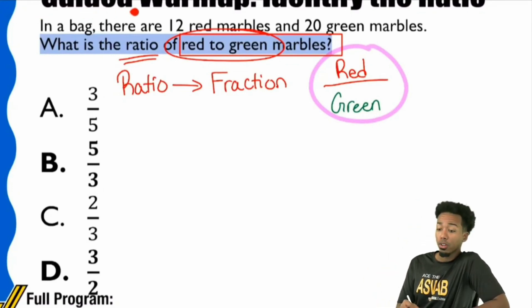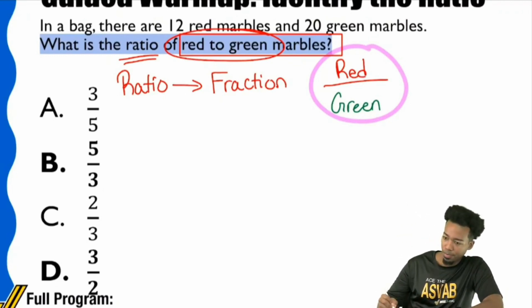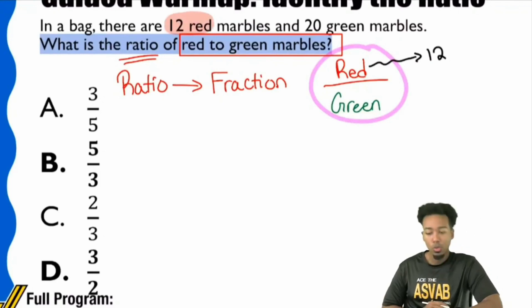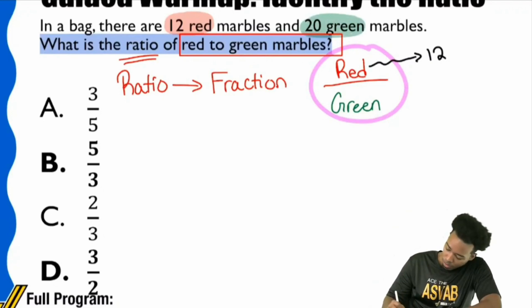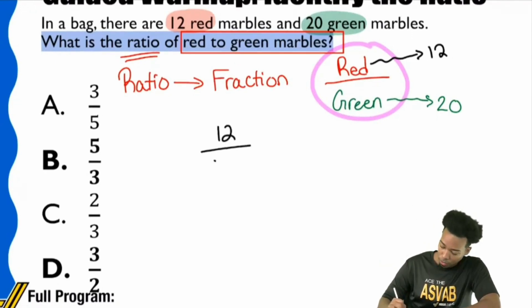In a bag, there are 12 red marbles and 20 green marbles. Let's go ahead and write a ratio of red to green. How many red marbles did they say there were? They say 12, right? 12 red marbles. And how many green marbles? 20 green. So we have 12 red over 20 green. That's it. We actually had all the information we needed, and so we have 12 red over 20 green.